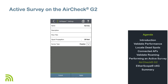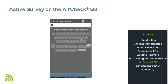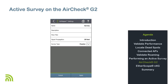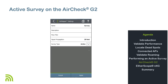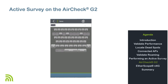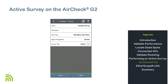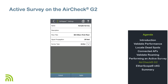Tap the circle next to the floor plan to select it. Now set the signal propagation distance, which will depend on the type of facility where the survey is being conducted. For an office with cubicles, 20 feet is a good number. A larger value could be used in locations with few RF obstacles. Now select Survey Type — for this video, we're doing an active survey. It's also a good idea to provide a name and description for the survey. Once the configuration is complete, tap Apply.